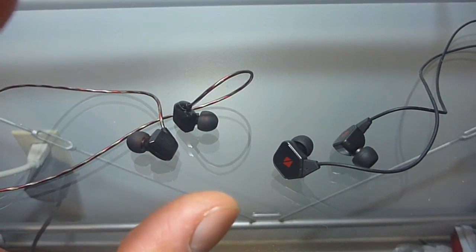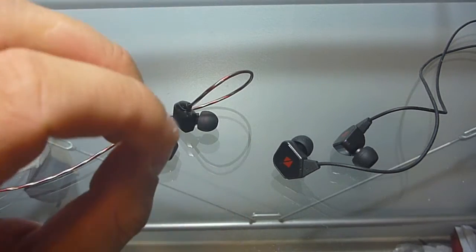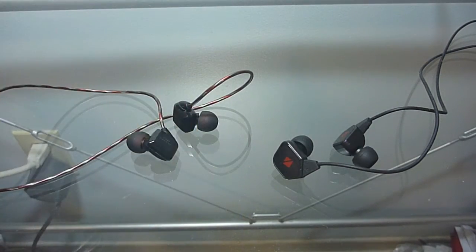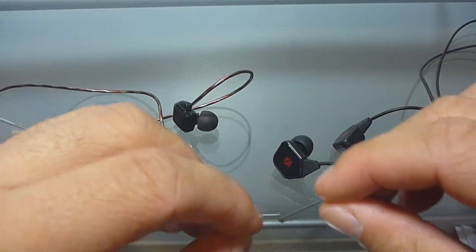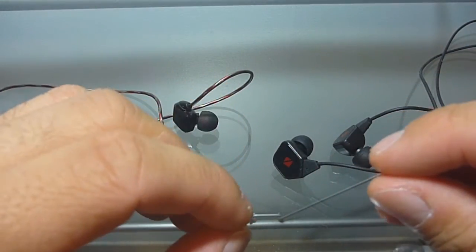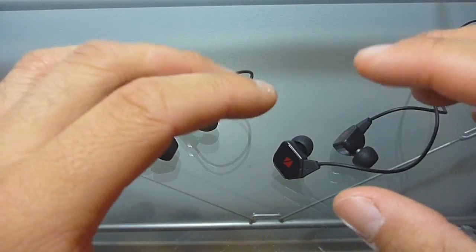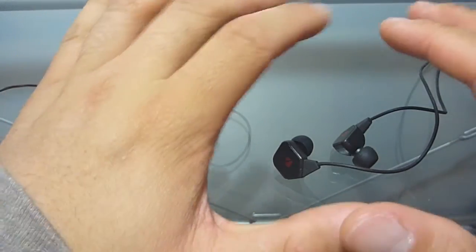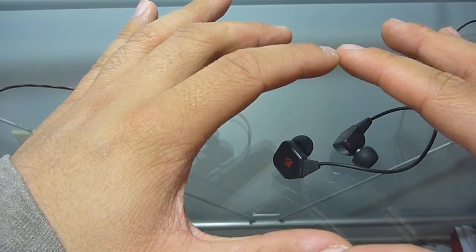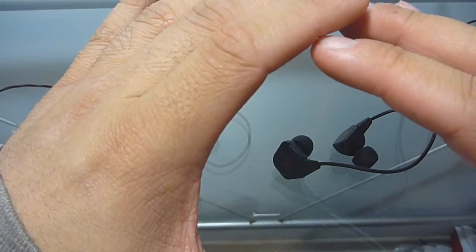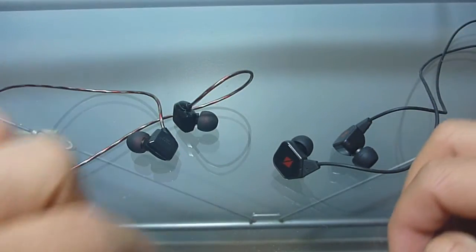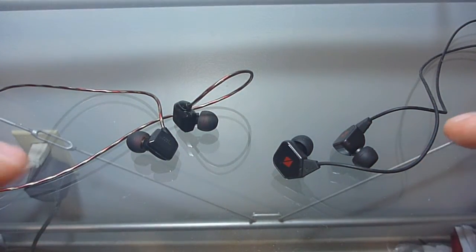It definitely has that extra bass response and that extra treble energy to make it work better with a wider variety of different genres compared to the Havi's, which I think at times can sound a little bit too thin and a little bit boring in a sense. That said, I still highly recommend the Havi B3 Pro 1s if you're looking for a neutral option and you're on a budget and you're looking for something supremely unique in that price range. So I hope that video helped you guys out.